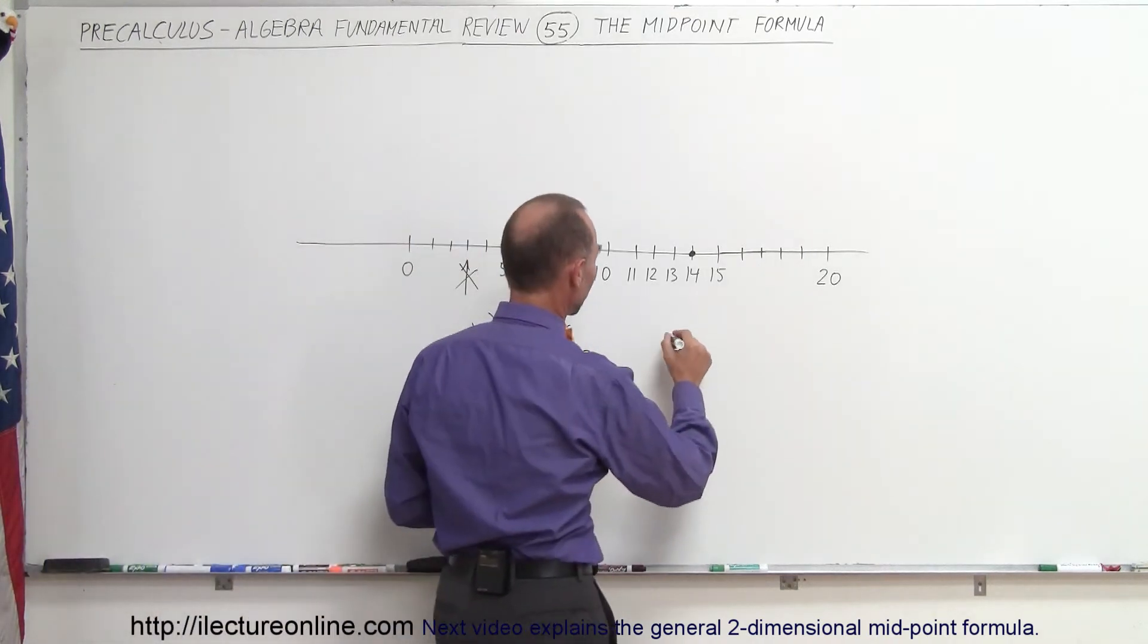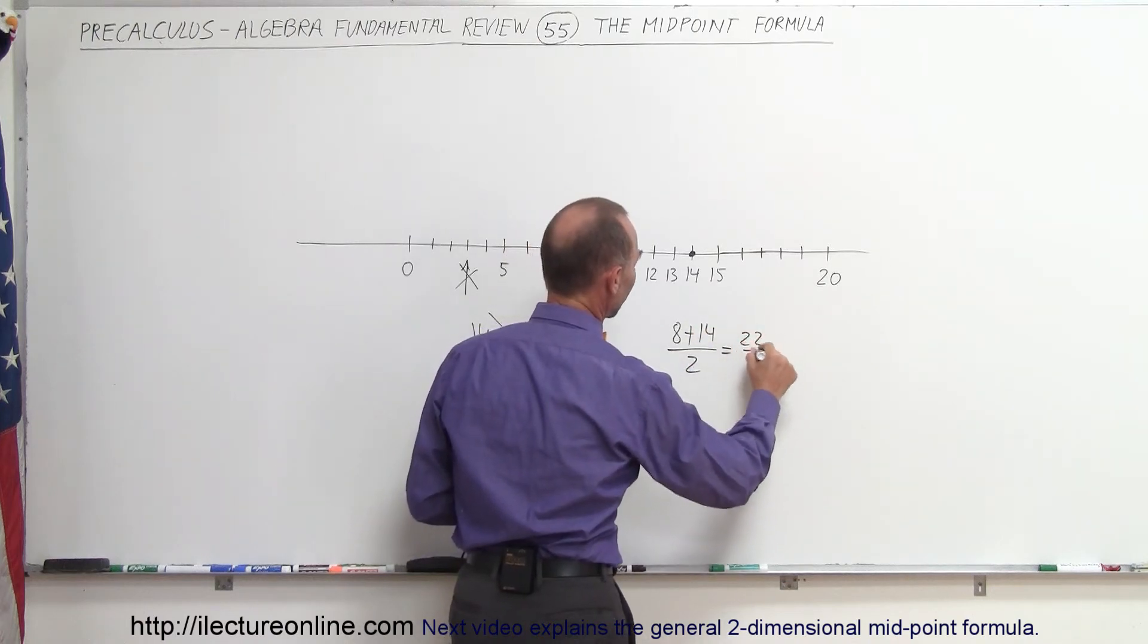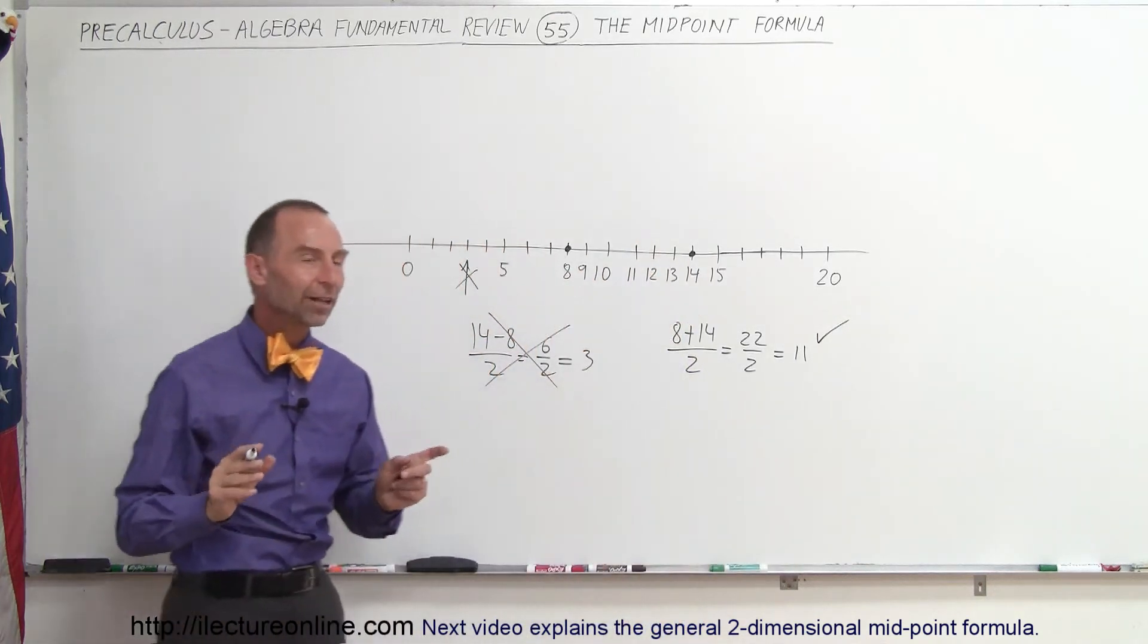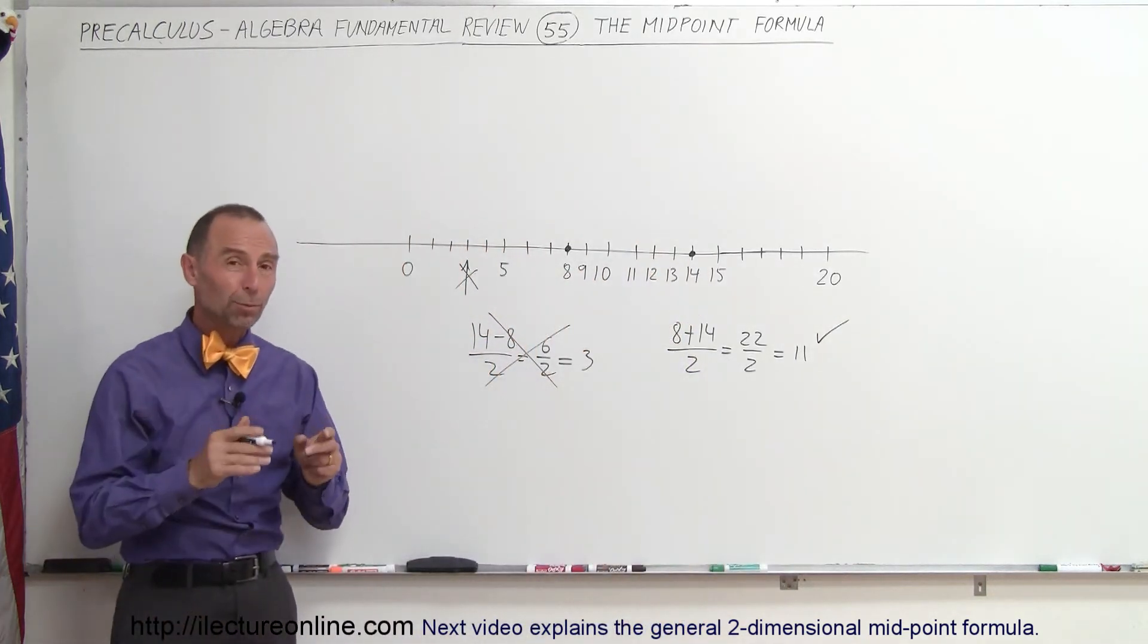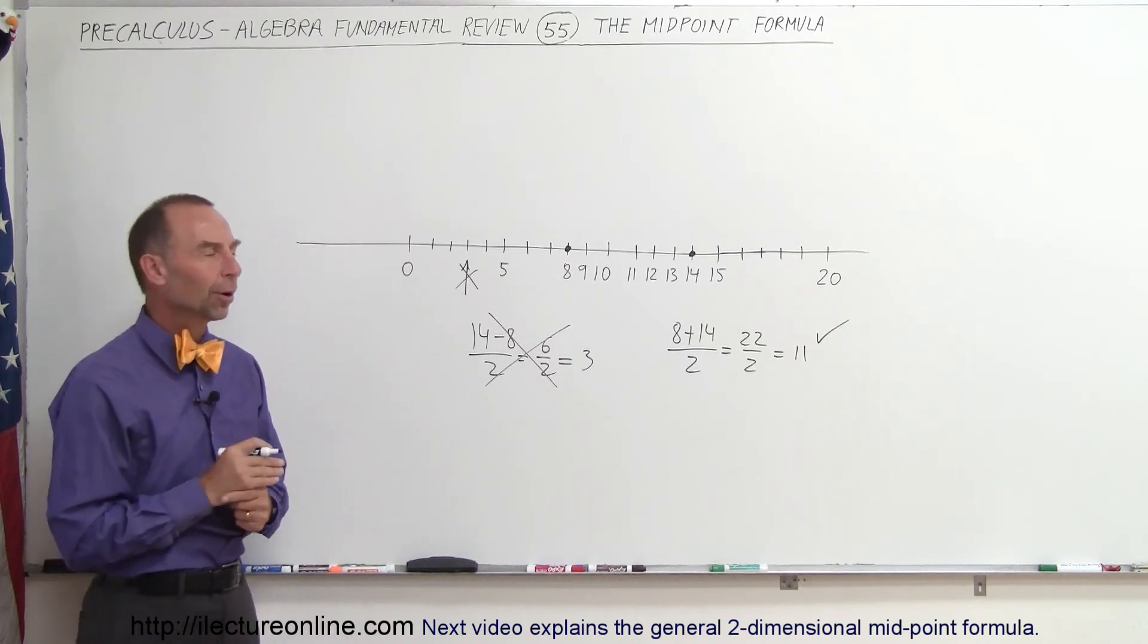So if we add the two points together, 8 plus 14, and we divide by 2, we get 22 divided by 2, which gives us 11, and that is the correct value. So to find the midpoint between any two values, you simply add those two values together and divide by 2 to get the midpoint.